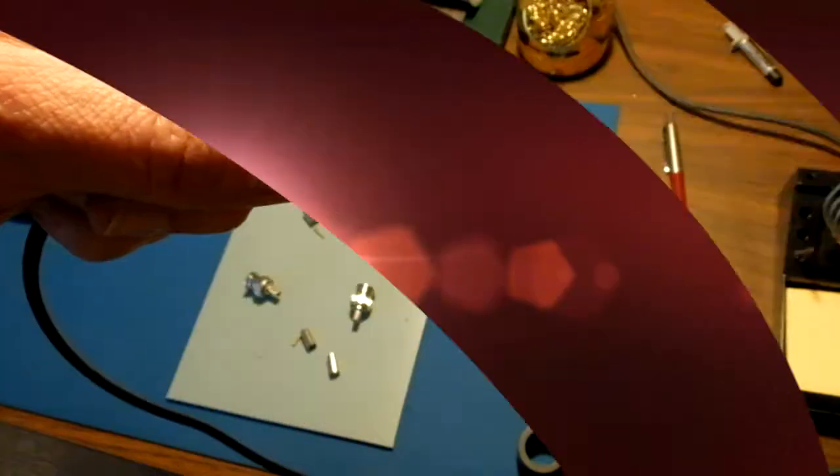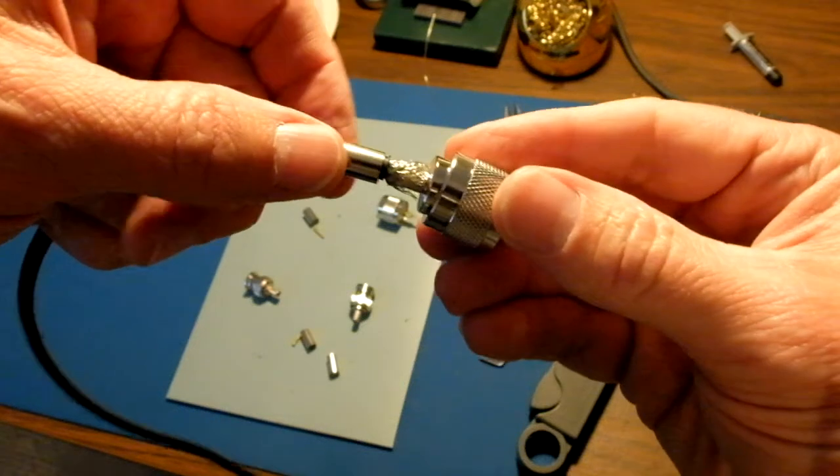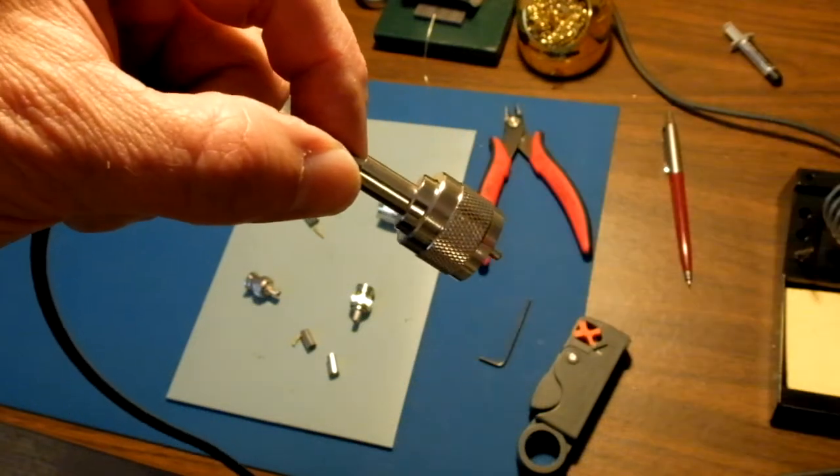We're going to fold our braid over the knurled section of the connector, slide this collar up, and we're going to crimp that.